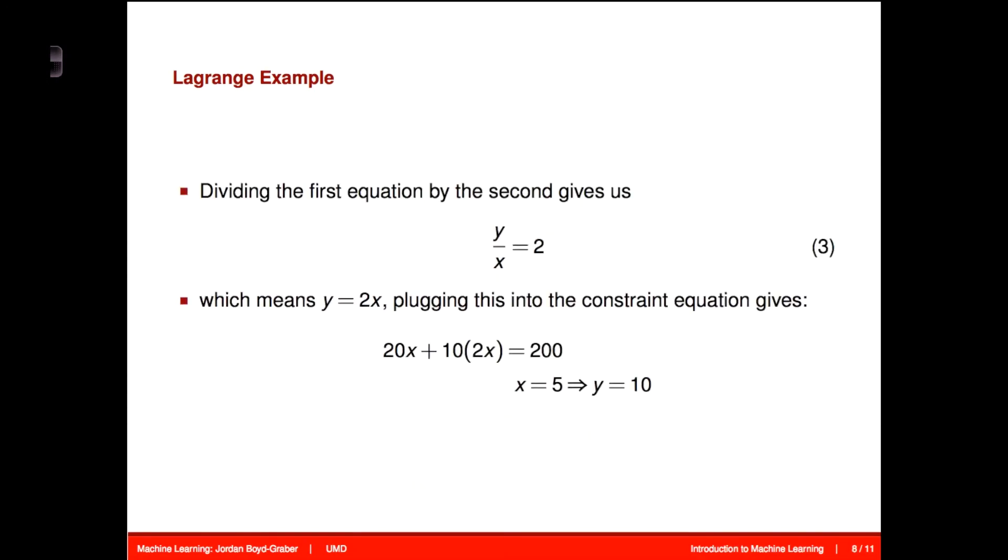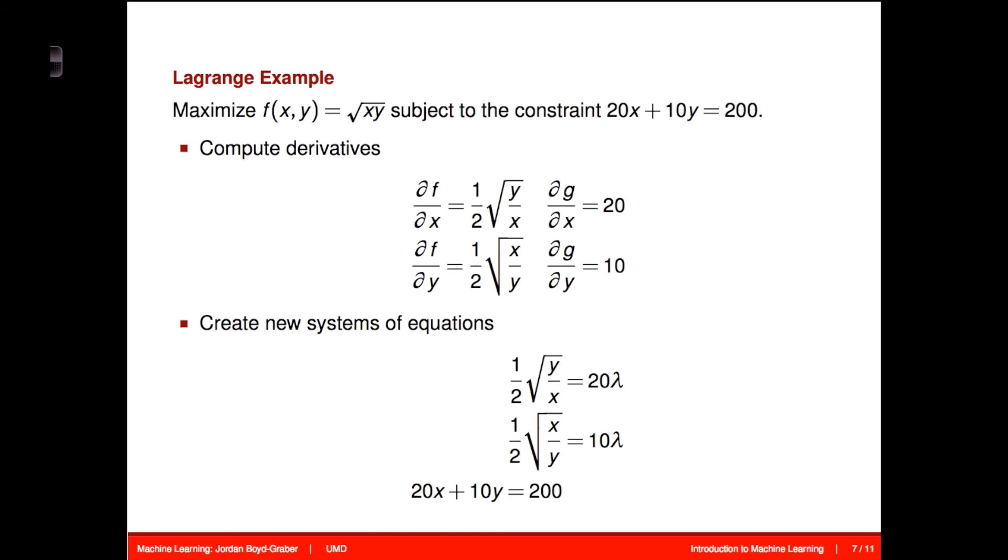So we can now do standard algebra to solve this. We divide the first equation by the second, which gives us y over x equals 2. And then this means that y equals 2x, so we can plug that into the constraint equation to give us that 20x plus 20x equals 200, which means that x equals 5. And double x to get y, that gives us 10. So this is the solution to optimizing the square root of x times y, subject to the constraint that 20x plus 10y equals 200.